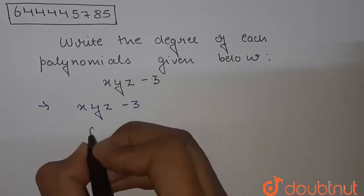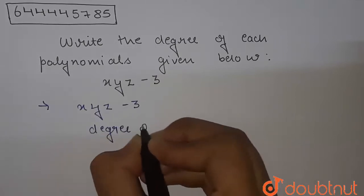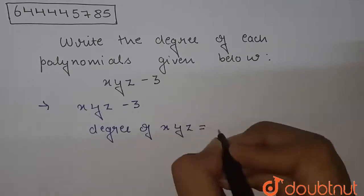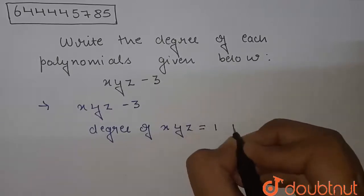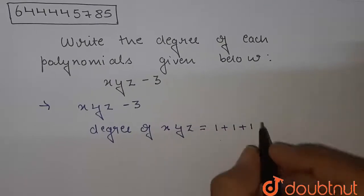So if we see here individually, the degree of this xyz is what? See, the power of x is 1, similarly y power is 1, and z power is also 1. So the highest power of this term is 1 plus 1 plus 1, that is equal to 3.